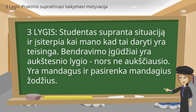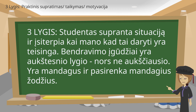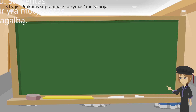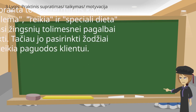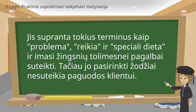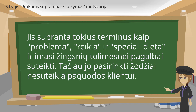The student is aware of his environment and intervenes when he believes it is right to do so. Communication skills are at a higher level although not the highest. There is politeness and courtesy in his choice of words. Explanation regarding why the guest is stopped is provided to some level but not adequately. Practical understanding of the problem is present and the student is motivated to provide further assistance. He understands terms such as problem, need, special diet and takes a step into further assistance. However, he fails to comfort the customer with his choice of words.